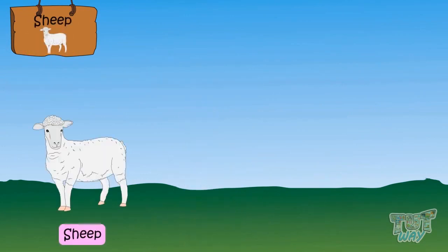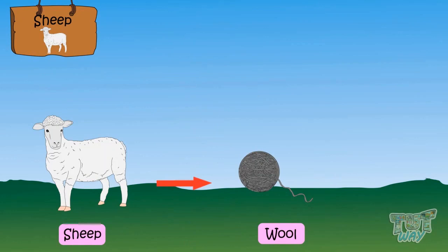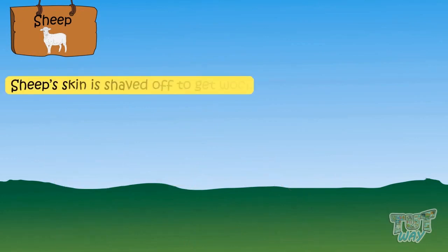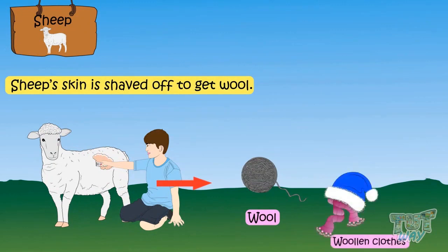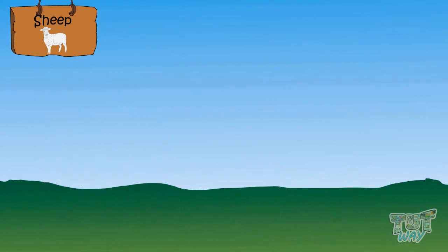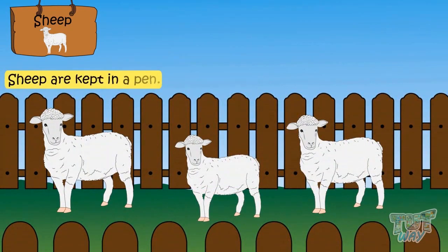Sheep is also a domestic animal that gives us wool. Sheep's fur is shaved off to get the wool, and this wool is then used to make woolen clothes that we wear in winter seasons. Sheep are kept in a pen.